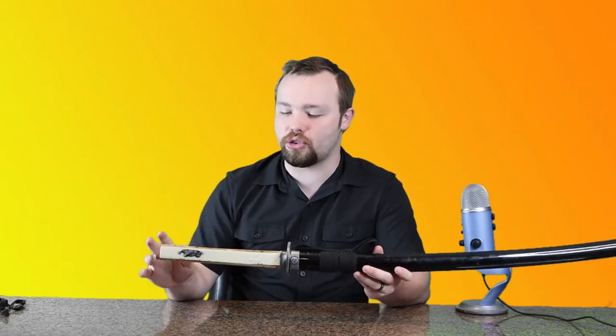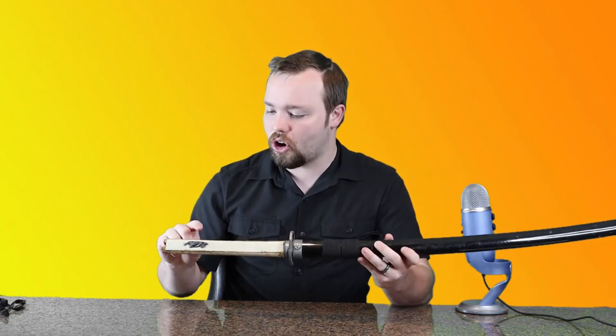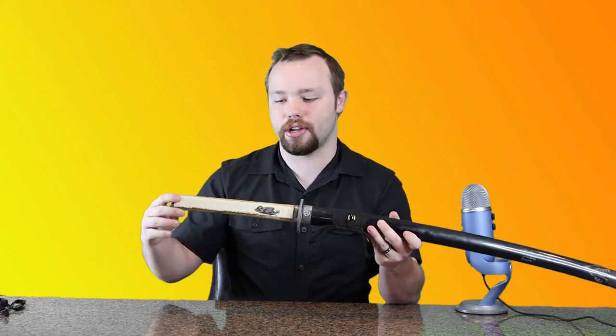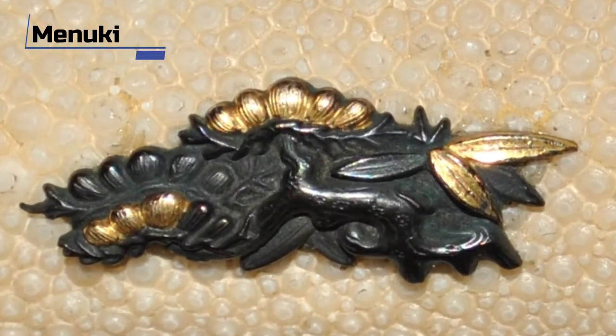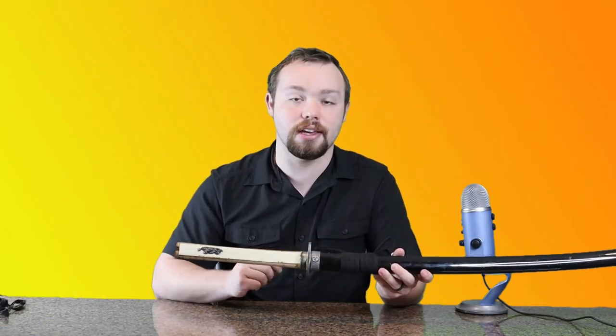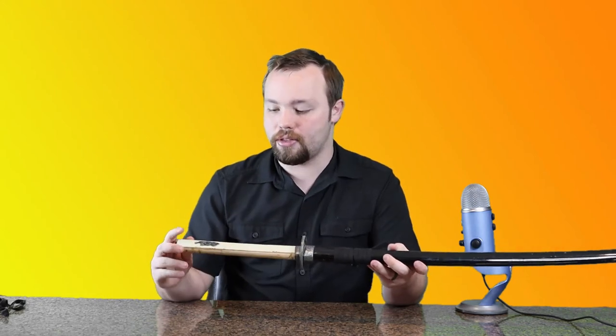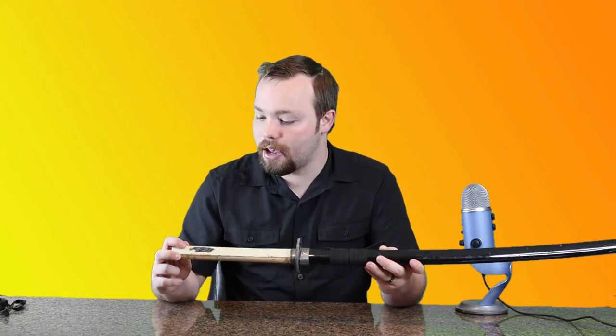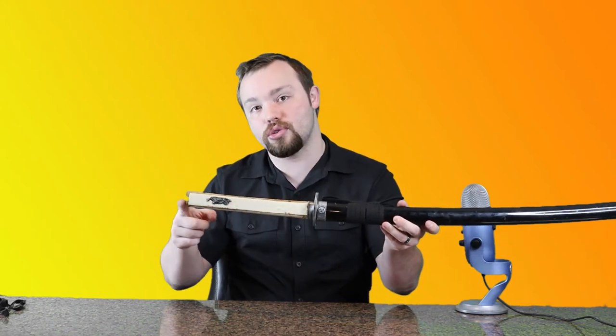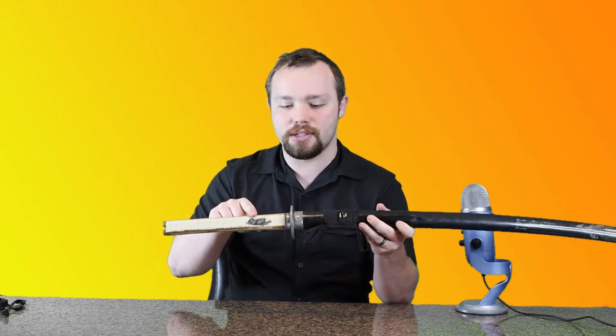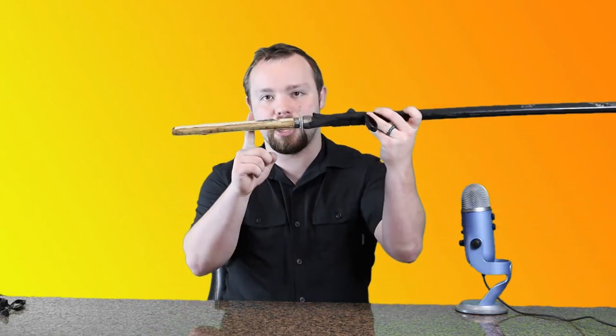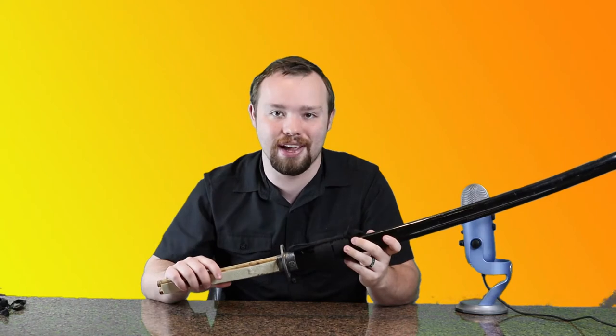Now that we've removed the tsuka ito, the first thing that you may have noticed are these little ornate ornaments that are here on the handle. These are called menuki, and they're not just for show. These are actually very functional. You might notice that this menuki is way closer to the end of the handle, whereas this one is closer to the guard. As a samurai would grip their sword, their hand would go right over the menuki. That little bit of elevation on the handle would give them a much better grip.